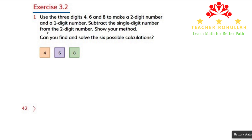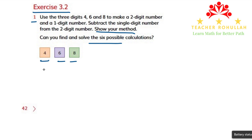In the first question of this exercise, we are asked to use three digits and make a two-digit and a one-digit number, then subtract the one-digit from the two-digit number. It is asking us to find the six possible answers, and we are asked to show our method of solving as well.